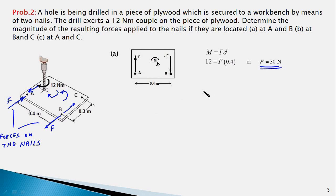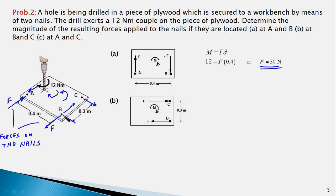In part b, the nails are fixed at points B and C. The forces on the nails act in the corresponding directions, forming a couple with moment 12 newton-meters. Using M equals F times d, with the known moment and distance, the force F works out to 40 newtons.